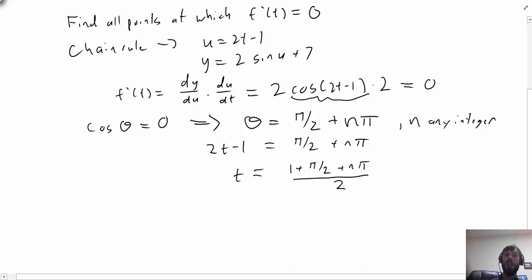Now to find the points of horizontal tangents, we'd also need to find the corresponding y-values, which means we take t and we plug it back into our formula for f(t), which was 2sin(2t - 1) + 7.